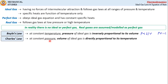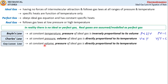The next one is Charles' Law, which states that at constant pressure, the volume of an ideal gas is directly proportional to its temperature. Mathematically, at constant pressure, volume is directly proportional to temperature, and that can be written as the ratio of volume to temperature being constant.